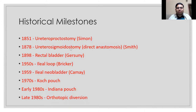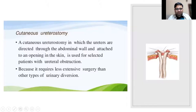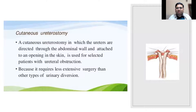Historical milestones: started with ureterosigmoidostomy, then progressed to ileal conduits, and finally to continent catheter approaches and orthotopic neobladders. Cutaneous ureterostomies are the primitive form still used today as an easier option.